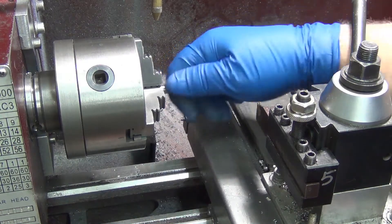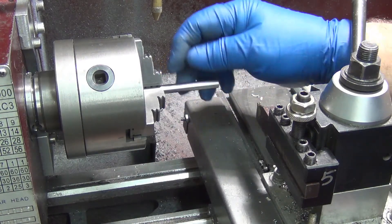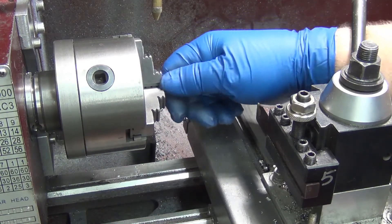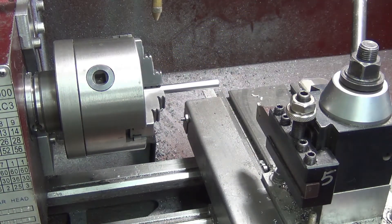When I hit start here it will come over, it will do the cutoff, and then it'll cut the radius. Then it'll pull back just a little bit and wait for me to pull the next amount of stock out.